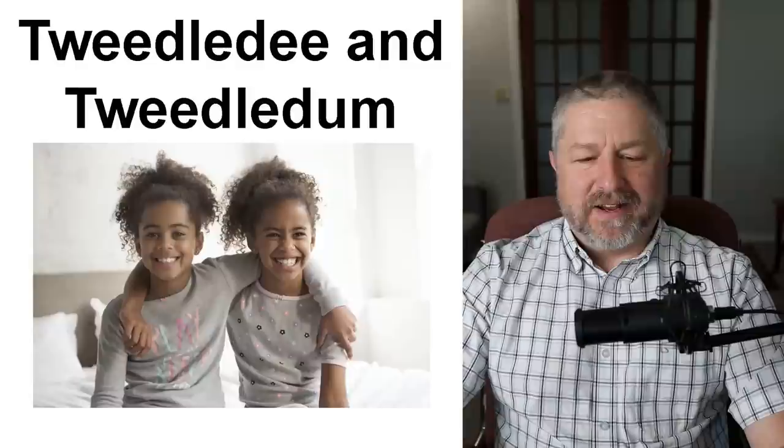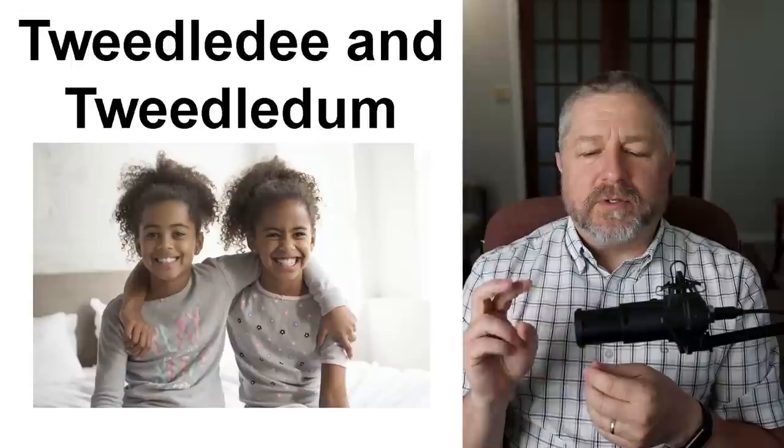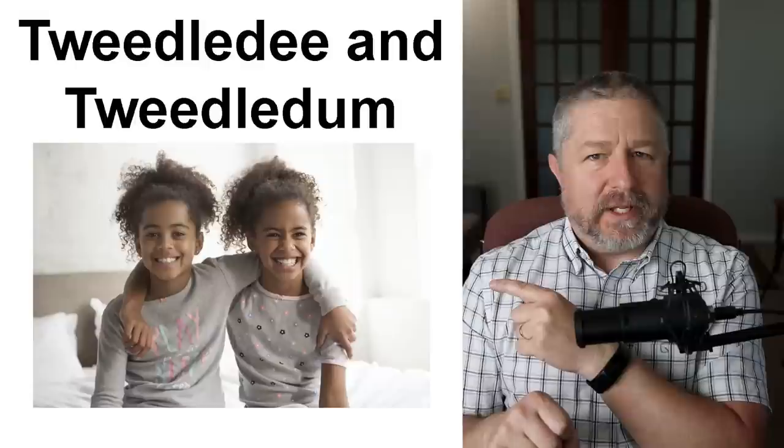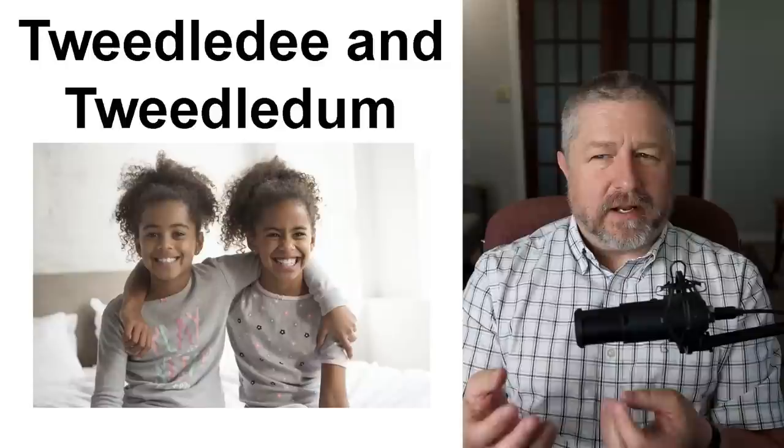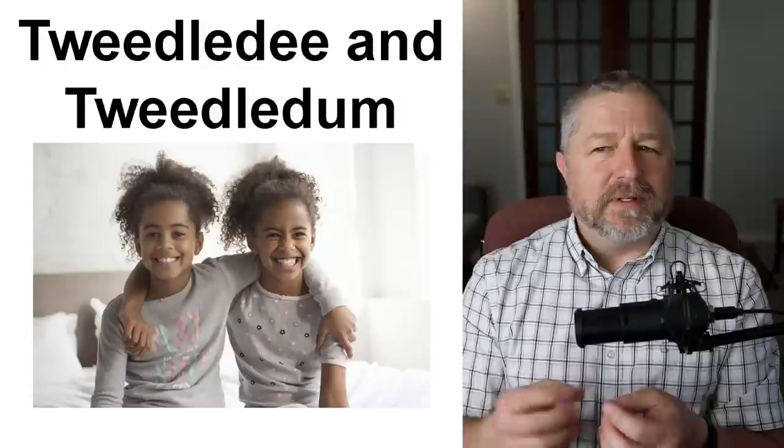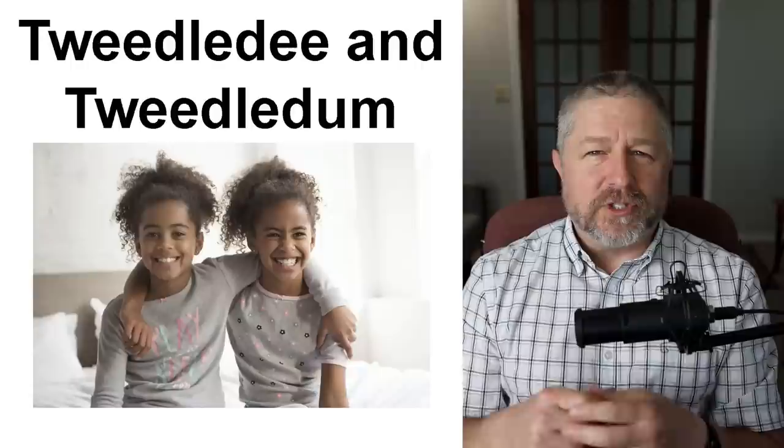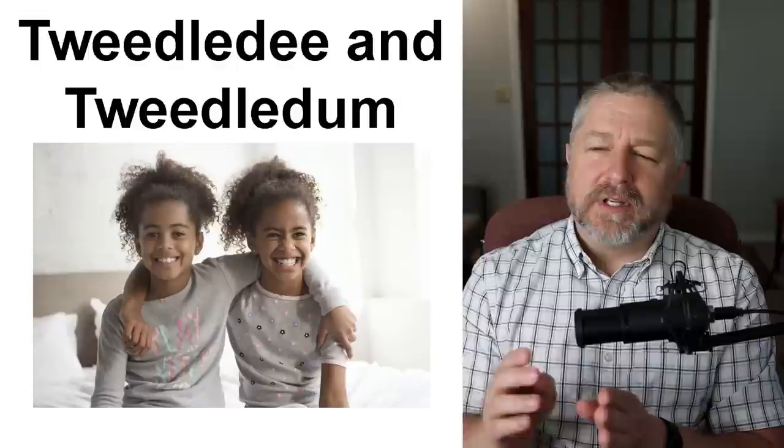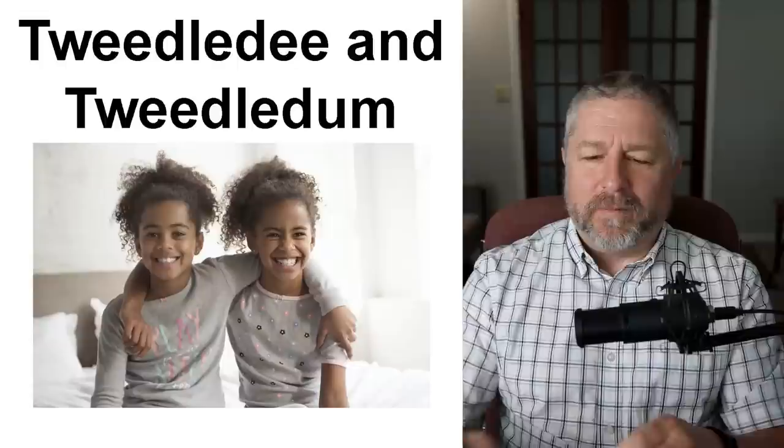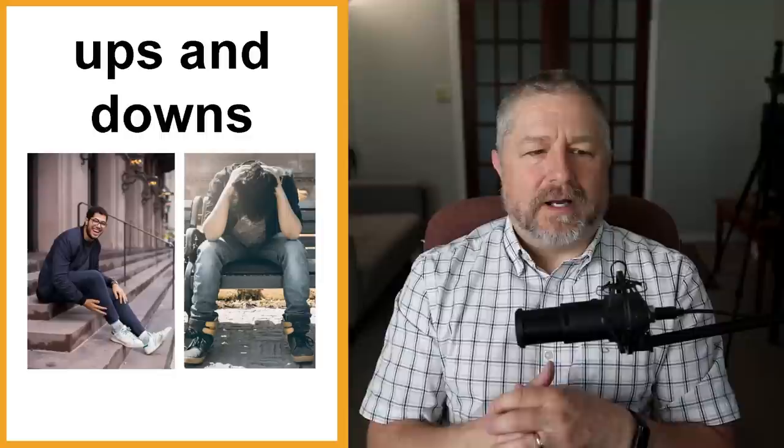Tweedledee and Tweedledum. This is kind of a funny one. This is a phrase, it's kind of insulting, and we use this to talk about two people who are very similar. They don't have to be twins. But if there are two people that you know that kind of look similar or dress the same way or are friends, you might call them when they're not around Tweedledee and Tweedledum. It's an older phrase. I haven't heard students use this phrase for a very long time. But I used to work with two teachers who were very similar. They were the same height, they liked the same things, and sometimes when they weren't around, we would call them Tweedledee and Tweedledum. Remember, it's somewhat insulting, so be careful if you use this phrase. Also, not very common.